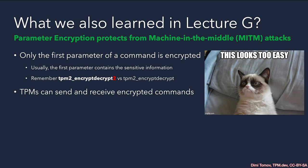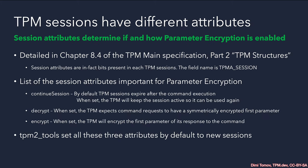I know this looks too easy, especially when using the TPM2 tools, which make it so straightforward to enable parameter encryption. But did you know that we can enable only the sending of data to the TPM to be encrypted, or vice versa, only the response from the TPM to be encrypted while our command request remains non-encrypted? Let's look under the hood at what happens when we use an API — what was hidden from us when using the TPM2 tools were the different session attributes.